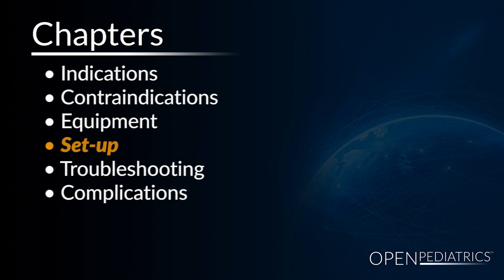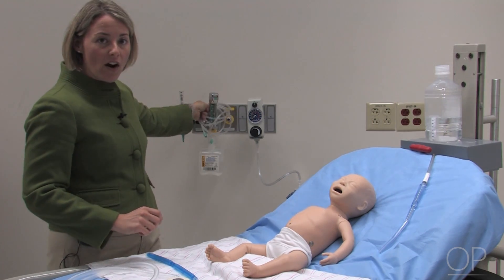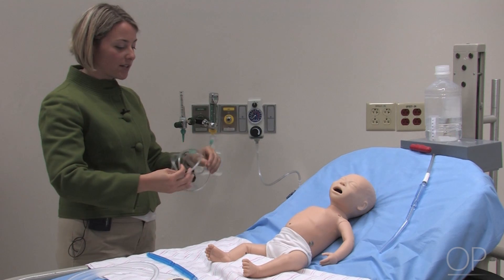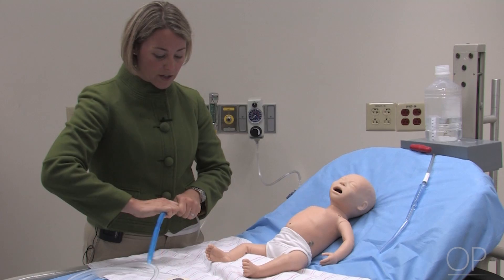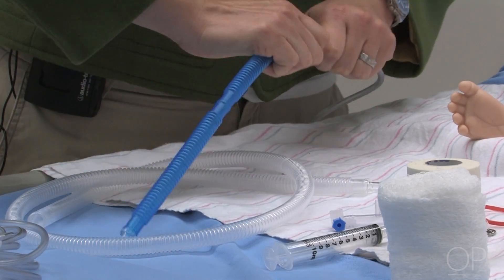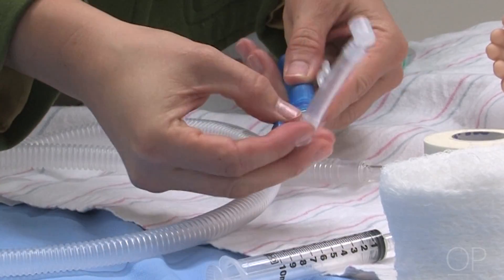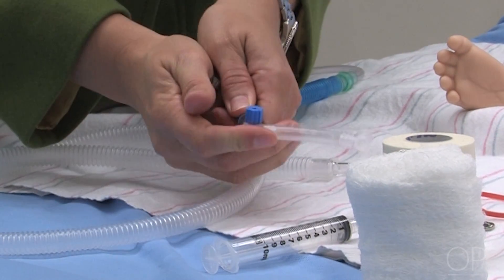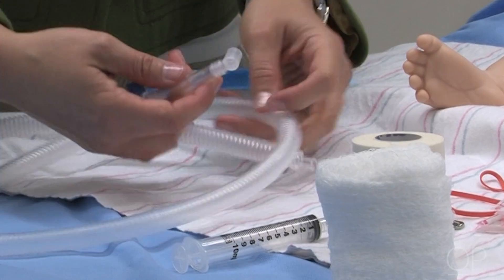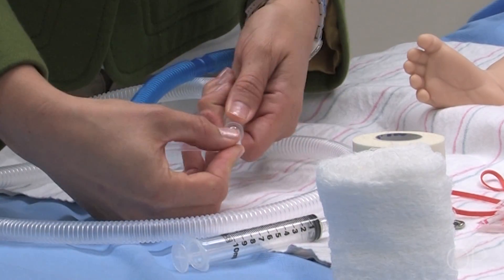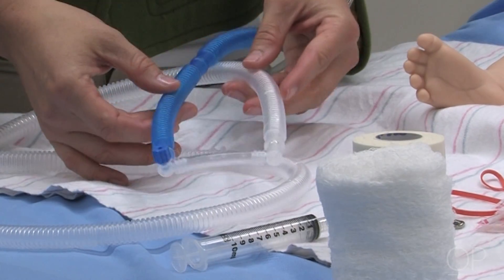Setup. I'll now demonstrate how to set up your bubble CPAP system. First, take your oxygen tubing connected to your oxygen source and connect it to one piece of corrugated tubing, ensuring a tight fit so the two tubings won't come apart. Then take the other end and insert your nasal cannula end, again making sure it fits tightly. Then take your other piece of corrugated tubing, inserting it on the other side of your nasal cannula — again making sure it's tight. This will be your patient interface.